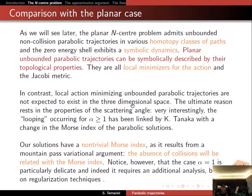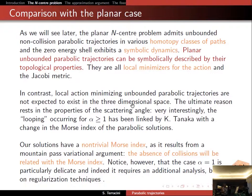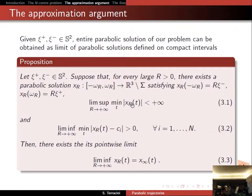We know that for the Kepler case, the minimality of the trajectory with topological constraints will avoid the presence of collisions. In the three-dimensional case this would still be true, but our trajectories are not minimal anymore. So one has to build some theory relating the presence of collisions with a non-trivial Morse index.